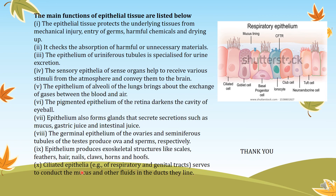The nasal cavity has ciliated epithelium which helps in beating the air and making it warmer so that air can enter properly. These are examples of different epithelial tissues — ciliated epithelium, goblet cells responsible for secretion of enzymes or hormones, and cube cells — performing different types of functions.